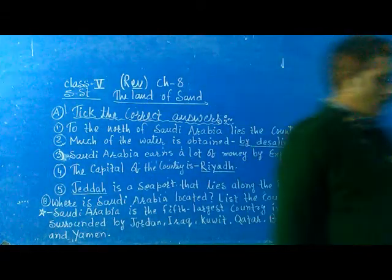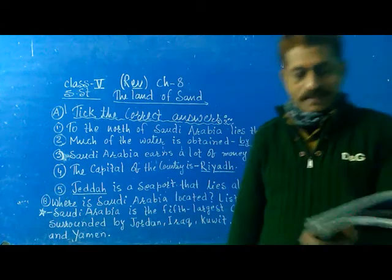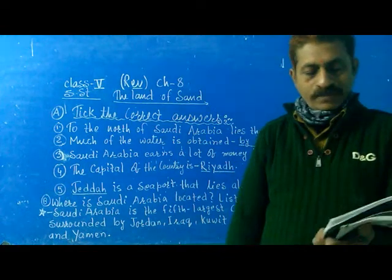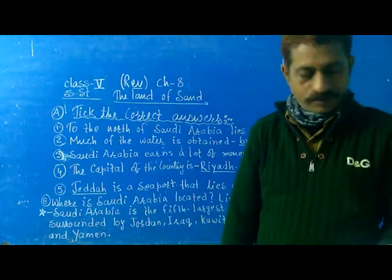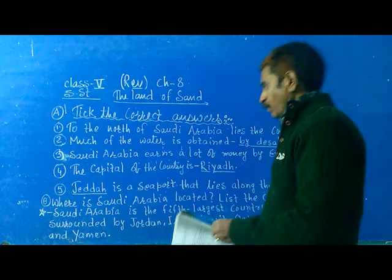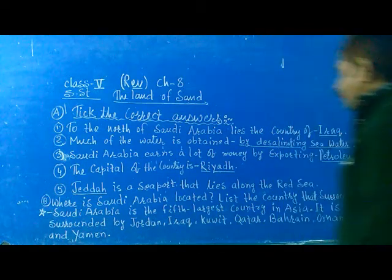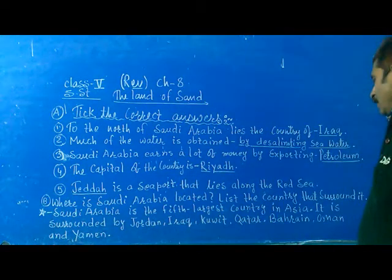The sea water is the sea water that flies along the white sea. Now, question number one: where is Saudi Arabia located?